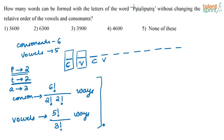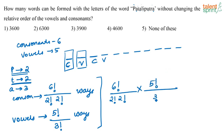So, how many such words can I form with the letters of the word PATALIPUTRA so that the vowels' and consonants' relative order does not change? The total number of ways is the product of these two results. If something can be done in m ways and another in n ways, the total is m × n — the basic counting principle. So the answer is 6!/(2!×2!) × 5!/3!, which equals 3600.